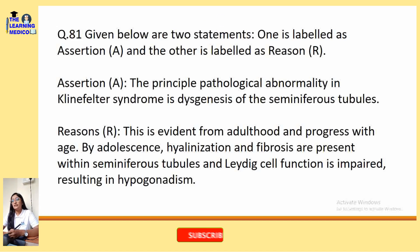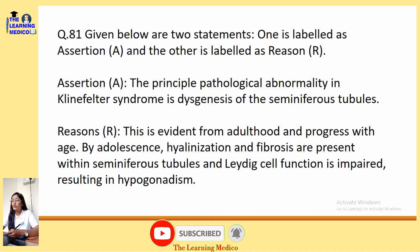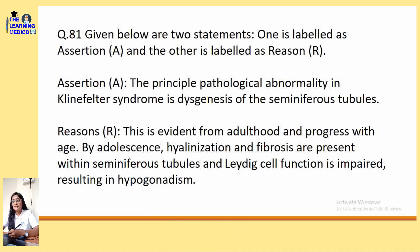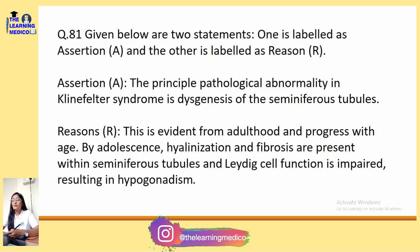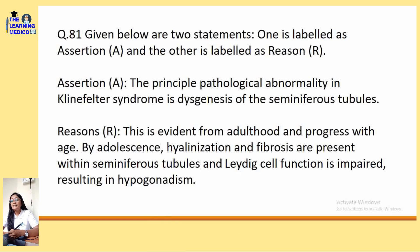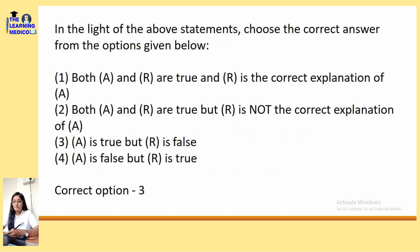Given below are two statements — an Assertion and Reason question. Assertion: the principle pathological abnormality in Klinefelter syndrome is dysgenesis of the seminiferous tubules. This is evident from childhood and progresses with age. By adolescence, hyalinization and fibrosis are present within seminiferous tubules and Leydig cell function is impaired, resulting in hypogonadism.